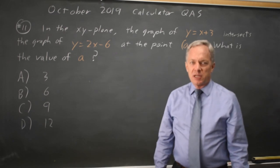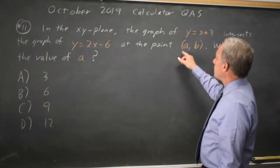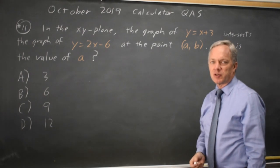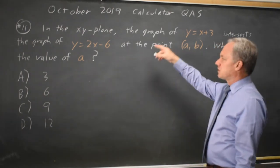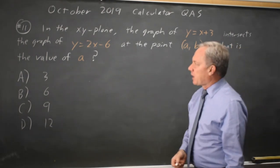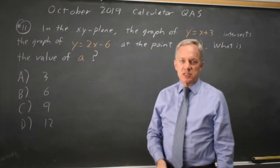This is calculator question number 11. College Board is asking for the x-coordinate of the point of intersection of the graphs of two lines. So this is a system of equations, and we have several ways of solving this.